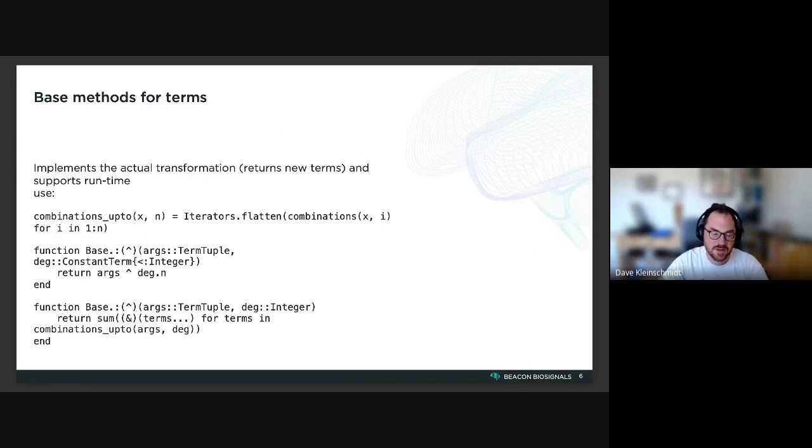And then we have a function that takes the expanded arguments as they're parsed by StatsModels during the formula macro expansion. And then the last step here is the lowest method, which is basically what you end up using if you want to construct these terms at runtime, where we exponentiate a tuple of terms args by degree, an integer.